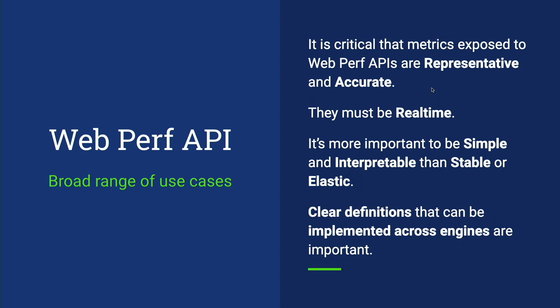The next use case is the WebPerf API — an API that web developers can use in their web page or that analytics providers can put into JavaScript so more people can access it. It's critical that when we expose something to a WebPerf API it is representative and accurate. It's a big cost to tell developers there's an important performance metric if it's not actually important or accurate. It needs to be real-time, and because you do have a large volume of data, you can sacrifice some interpretability or stability or elasticity. But it's critical that metrics be simple so other browser vendors can implement them and they can be polyfilled if possible. Clear definitions are also really critical.